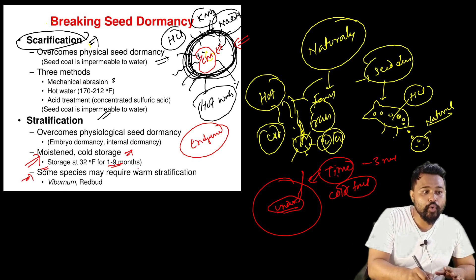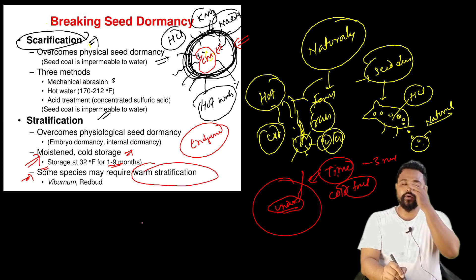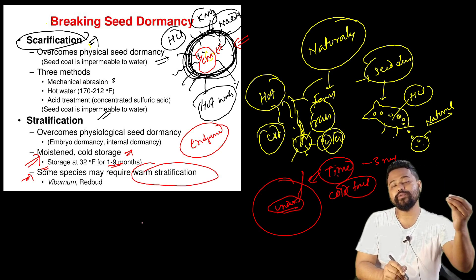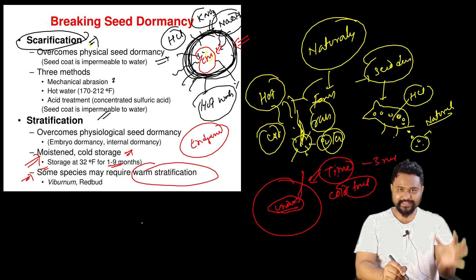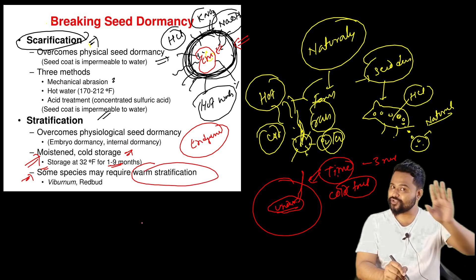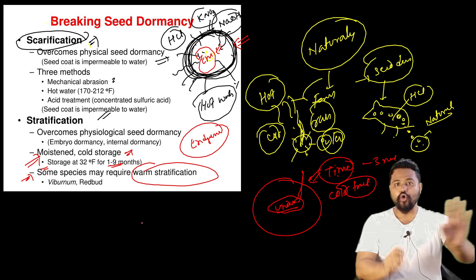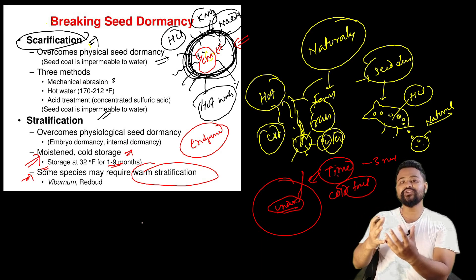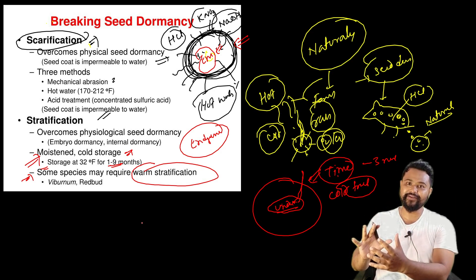In some species, warm stratification is required. Seeds stored at around 25 degrees Celsius benefit from warm storage stratification, while others need cold storage. So stratification - either warm or cold - is another key technique for breaking seed dormancy.